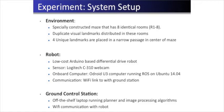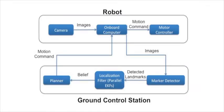Our mobile robot is a simple differential drive three-wheeled base and uses only vision for sensing. The robot streams its camera image to a laptop which runs the marker detector as well as planning algorithms. The laptop sends motion commands back to the robot over Wi-Fi.